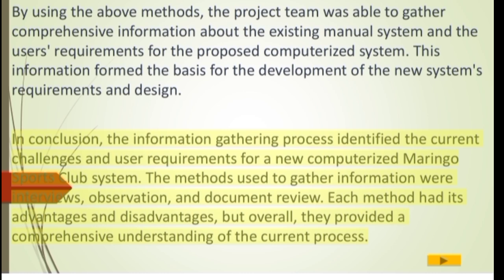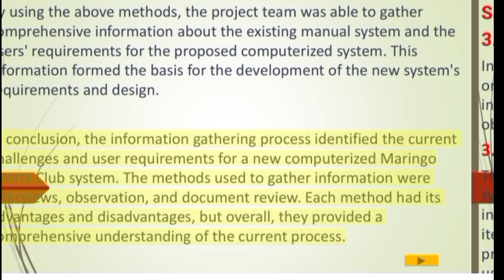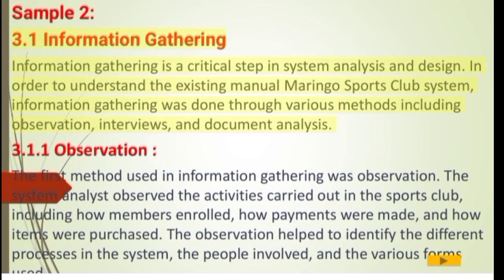In conclusion, the information gathering process identified the current challenges and user requirements for a new computerized Moringo Sports Club system. The methods used to gather information were interviews, observation, and document review. Each method had its advantages and disadvantages, but overall they provided a comprehensive understanding of the current process.